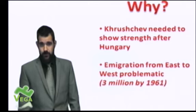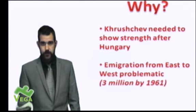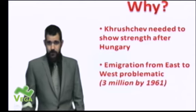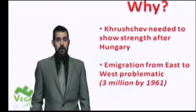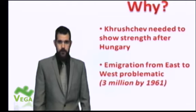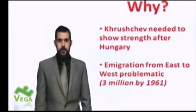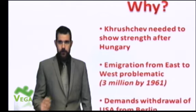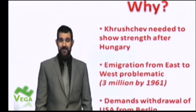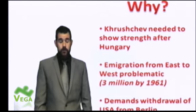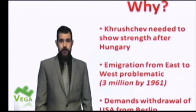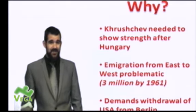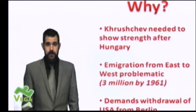Secondly, emigration from East Germany is now a disaster. Three million people since 1961 have crossed the border into West Berlin to get plane tickets to the West. This is a propaganda nightmare and he cannot let it continue. Finally, he demands the withdrawal of US troops from Berlin to show himself as a strong man and to close that exit route to the West.